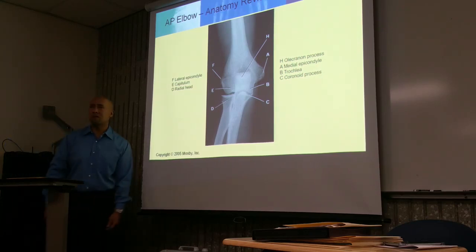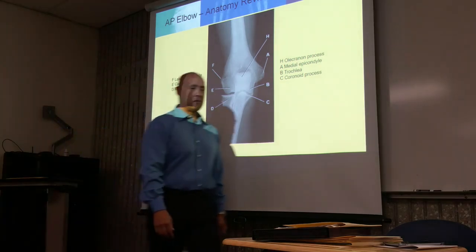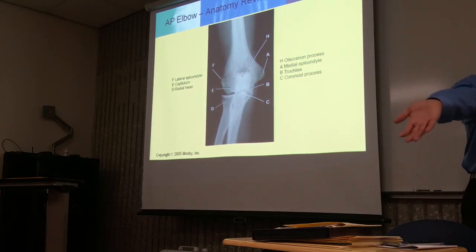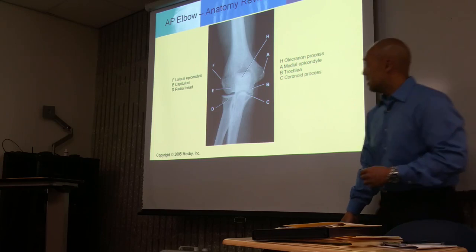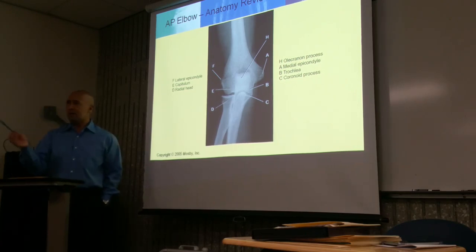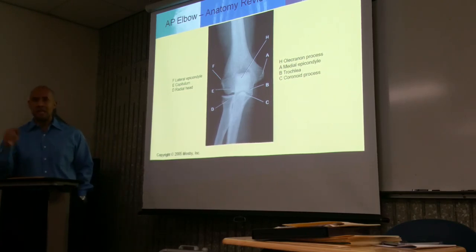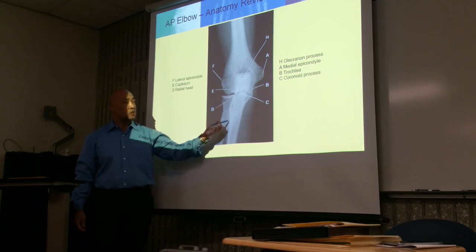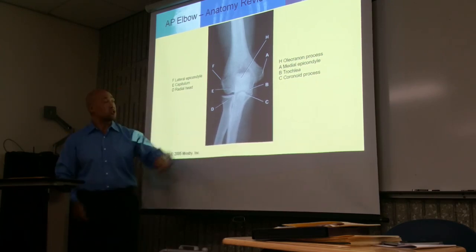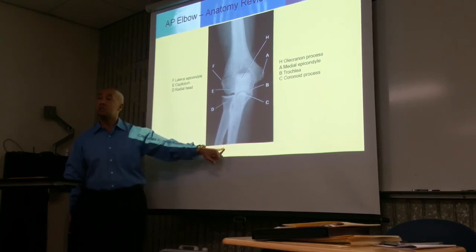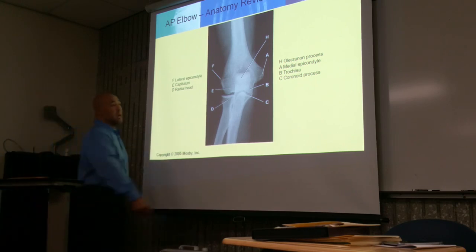Here we have an AP elbow — anterior-posterior, elbow facing forward. In the anatomical position it's going to be facing forward. I know this is an AP elbow because there's going to be slight superimposition of the radial head with the ulna, and slight superimposition of the radial tuberosity with the ulna. Proximally there's superimposition of the head and tuberosity, whereas there's separation of the shaft — this tells me it's a true AP of the elbow.